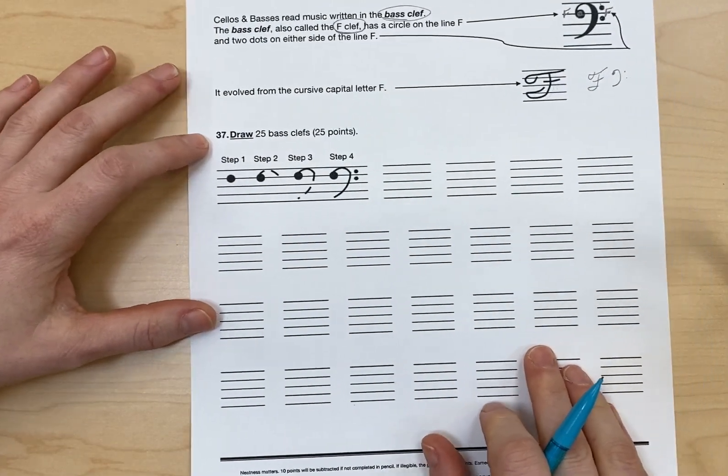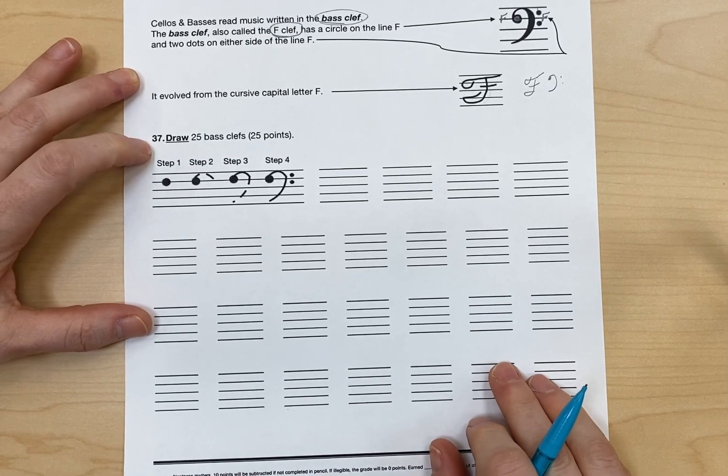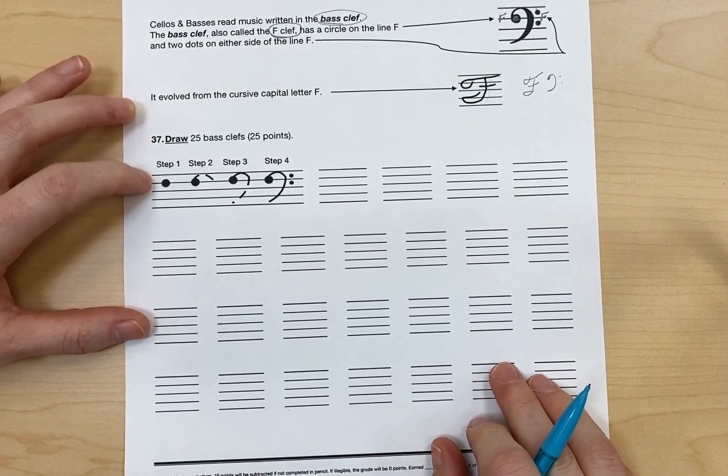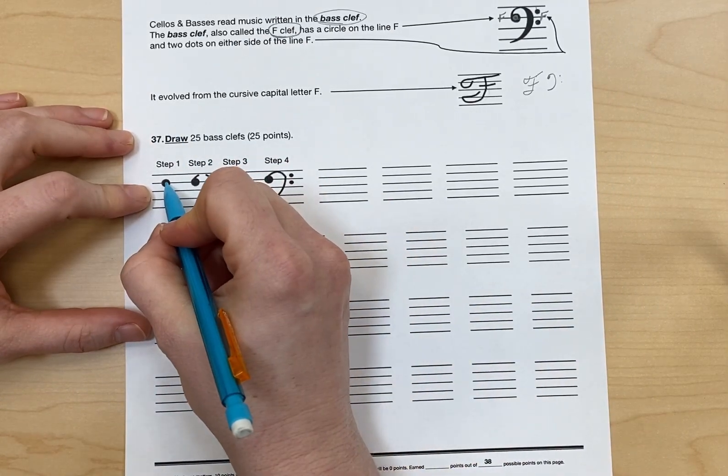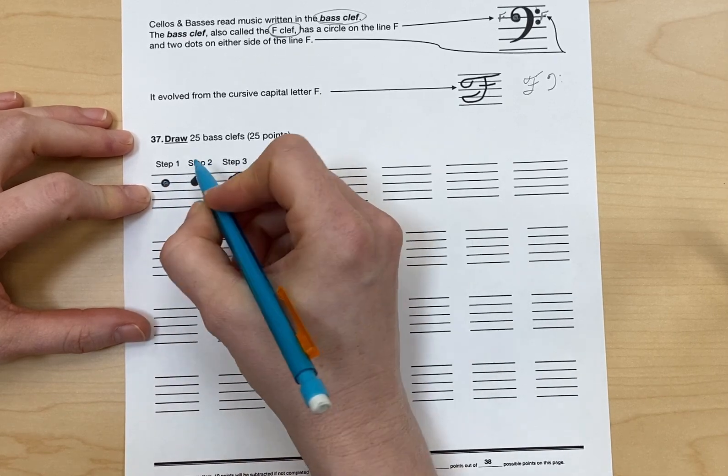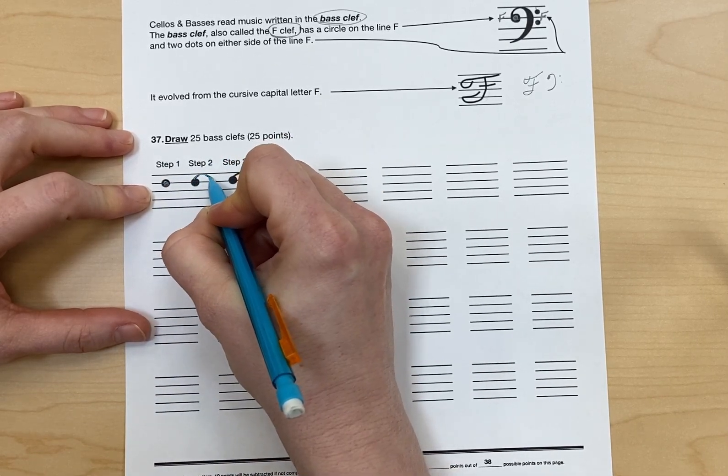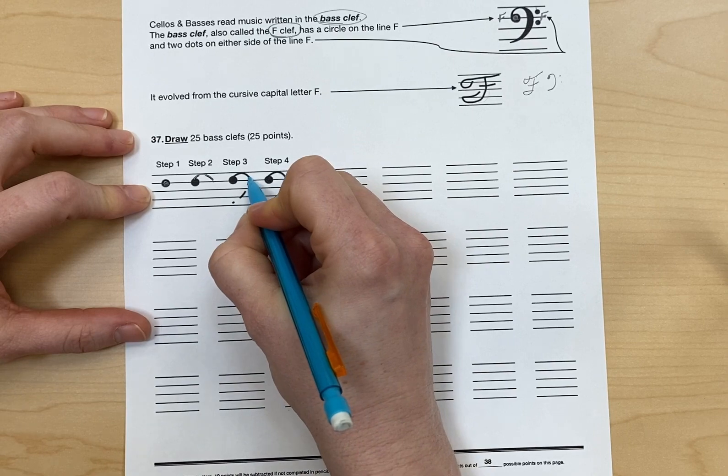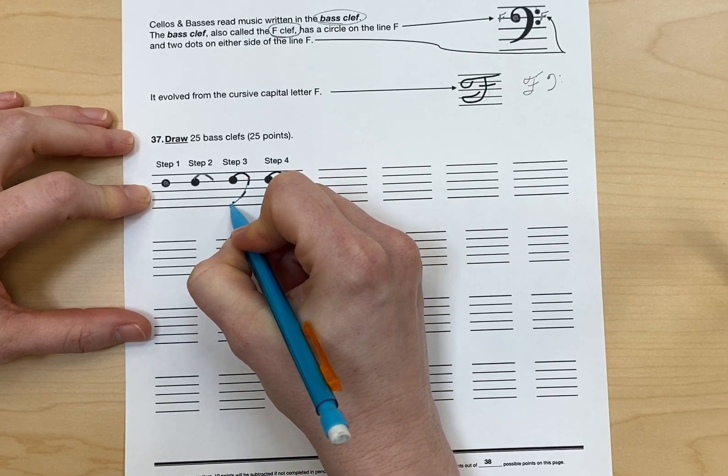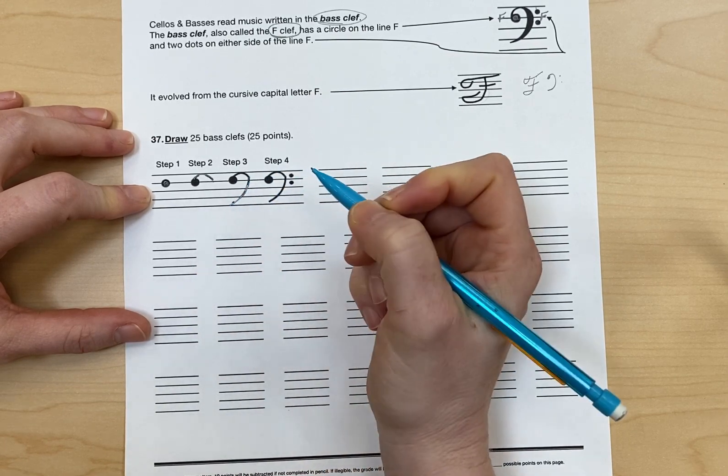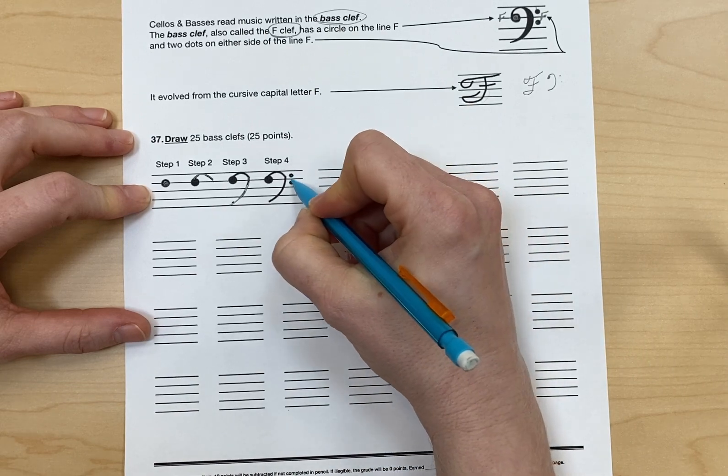So now we're going to draw 25 bass clefs. Step one is to draw the circle on the line F. Step two would be to start drawing above here. Step three is coming down. This is like drawing an ear or half of a heart. And then step four is the two dots.